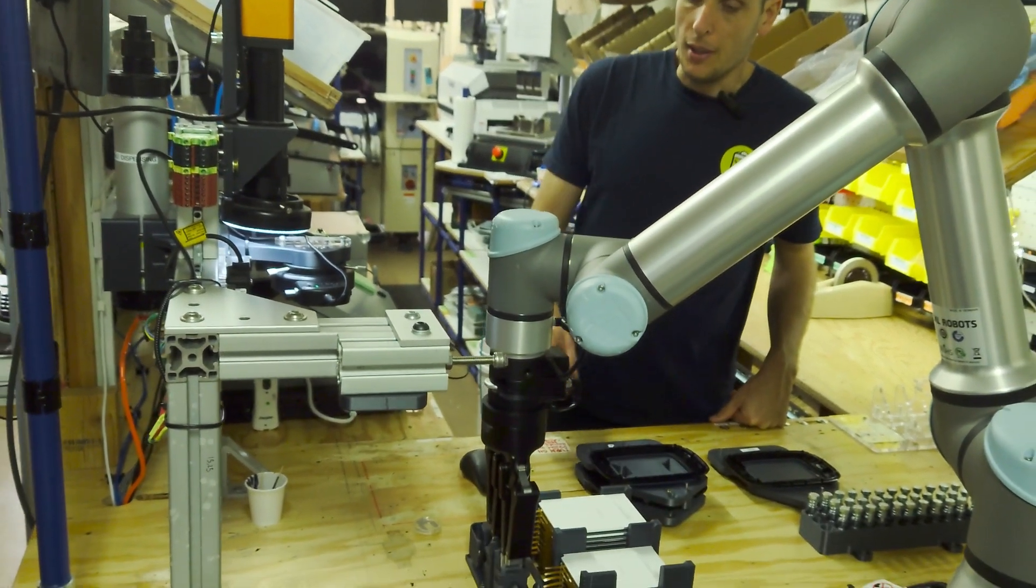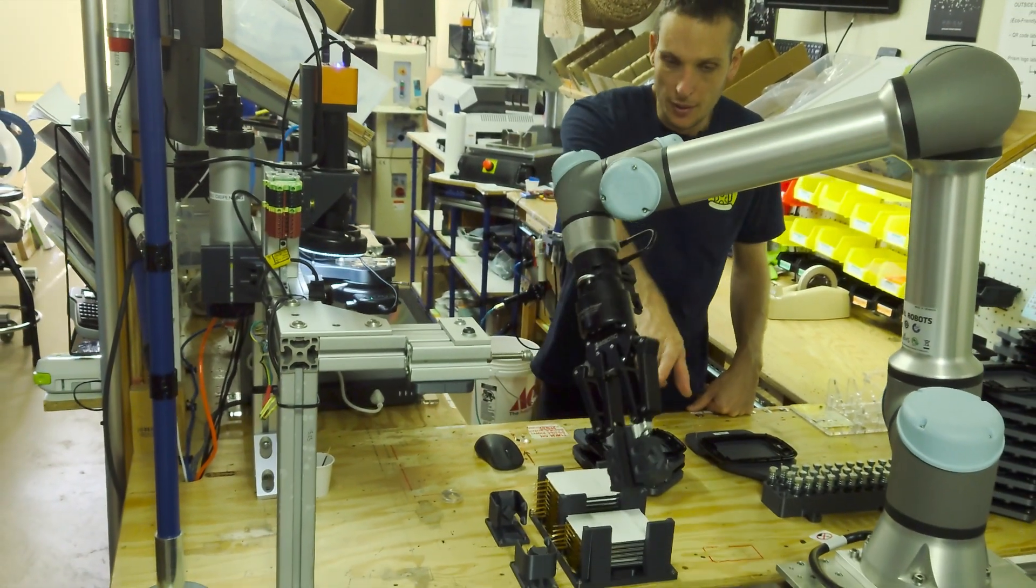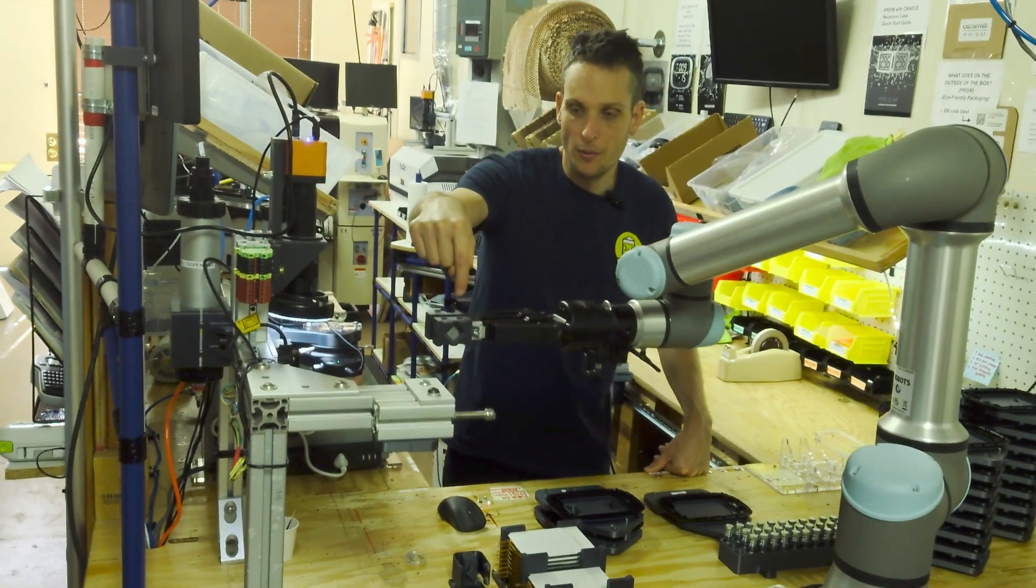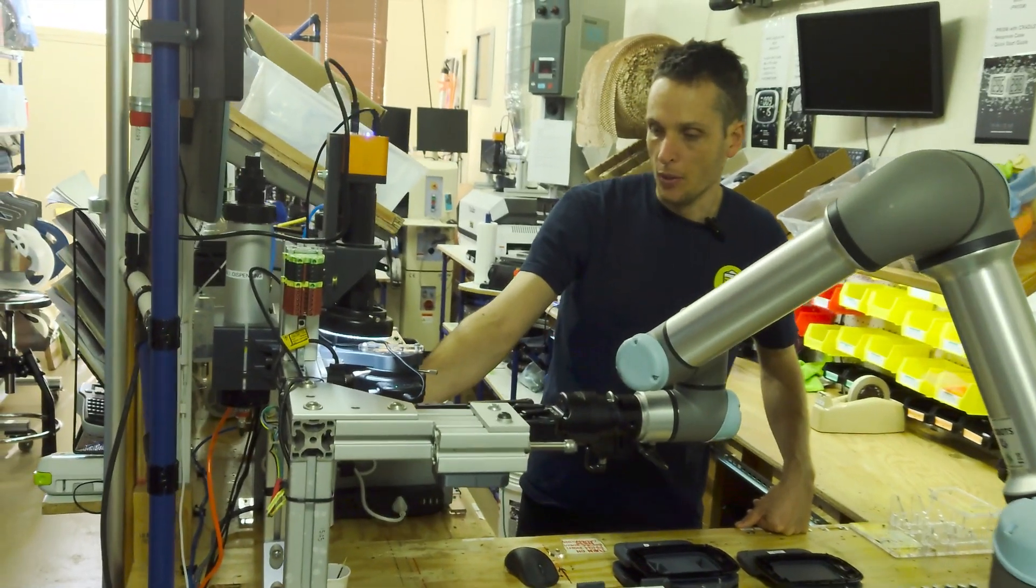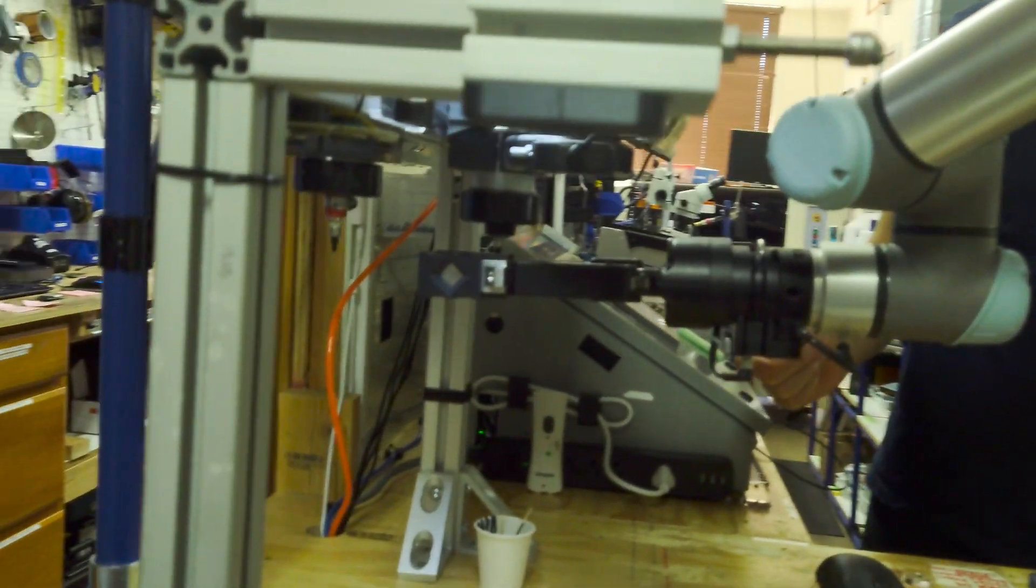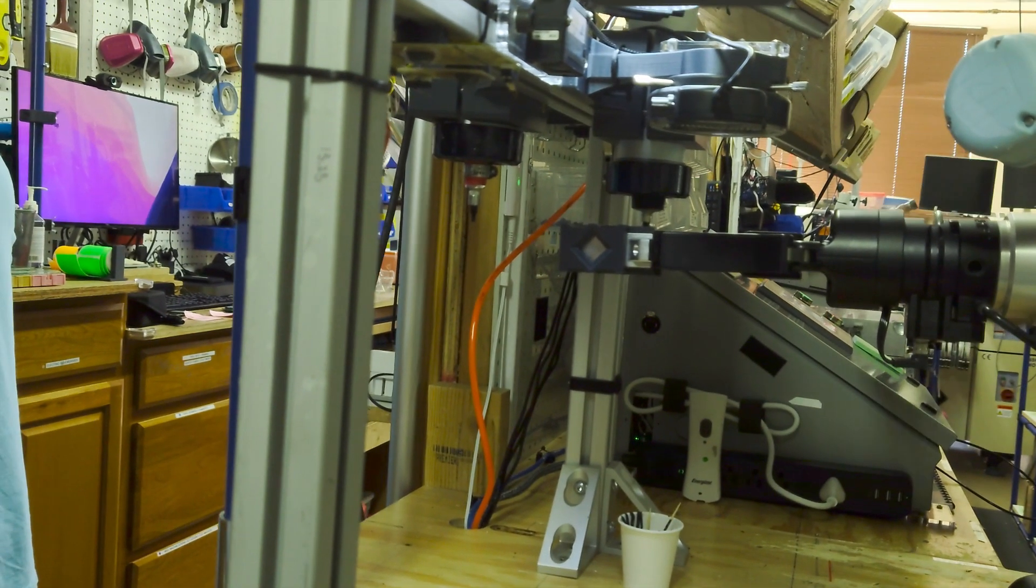And so now what we're doing is we put these gloves, if you will, on the robot fingers. And we're going to use that to wipe the nozzle. So we're purging a bit of glue.